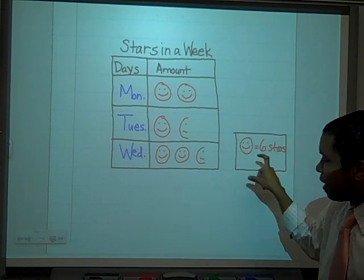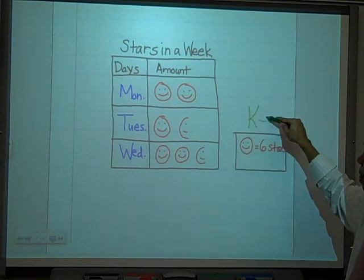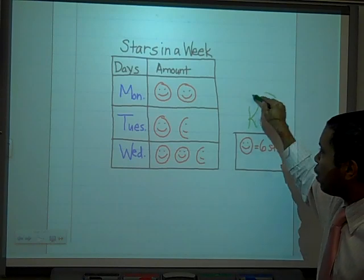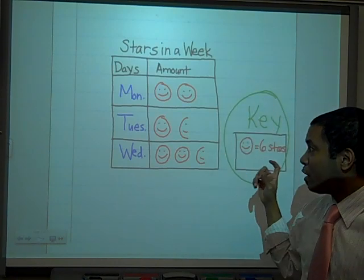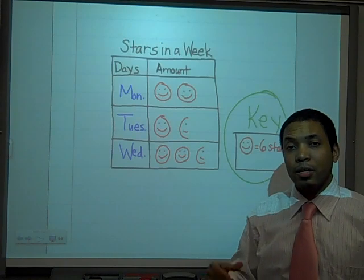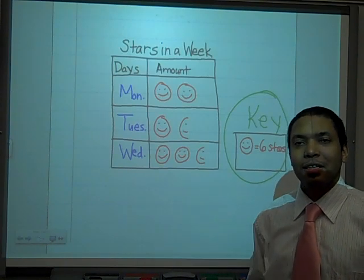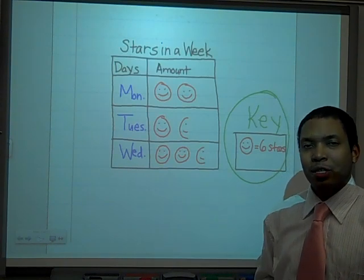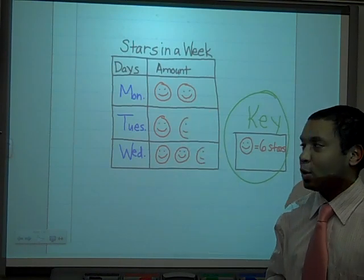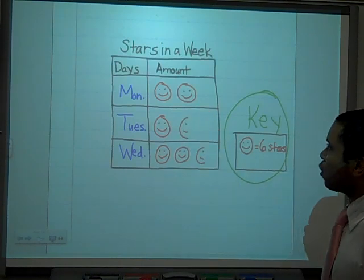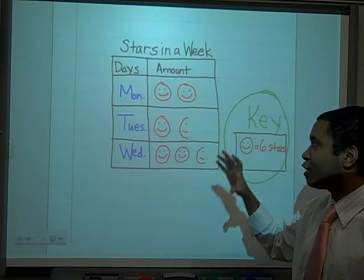This section right here is called the key. The key is the most important part of a pictograph. Because once you understand what each picture represents, you've unlocked the information and can start to make meaning of what each picture means. So the first thing you do when looking at a pictograph is go to your key.